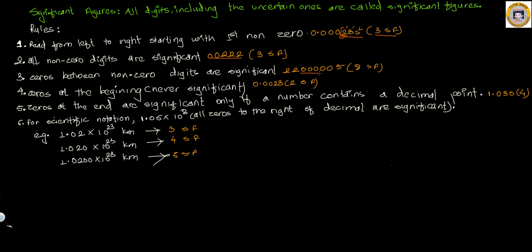Rule three: zeros between non-zero digits are significant. Whenever there is a zero between two non-zero digits, it is significant. So in this example we have 1, 2, 3, 4, 5, 6, 7, 8 significant figures.